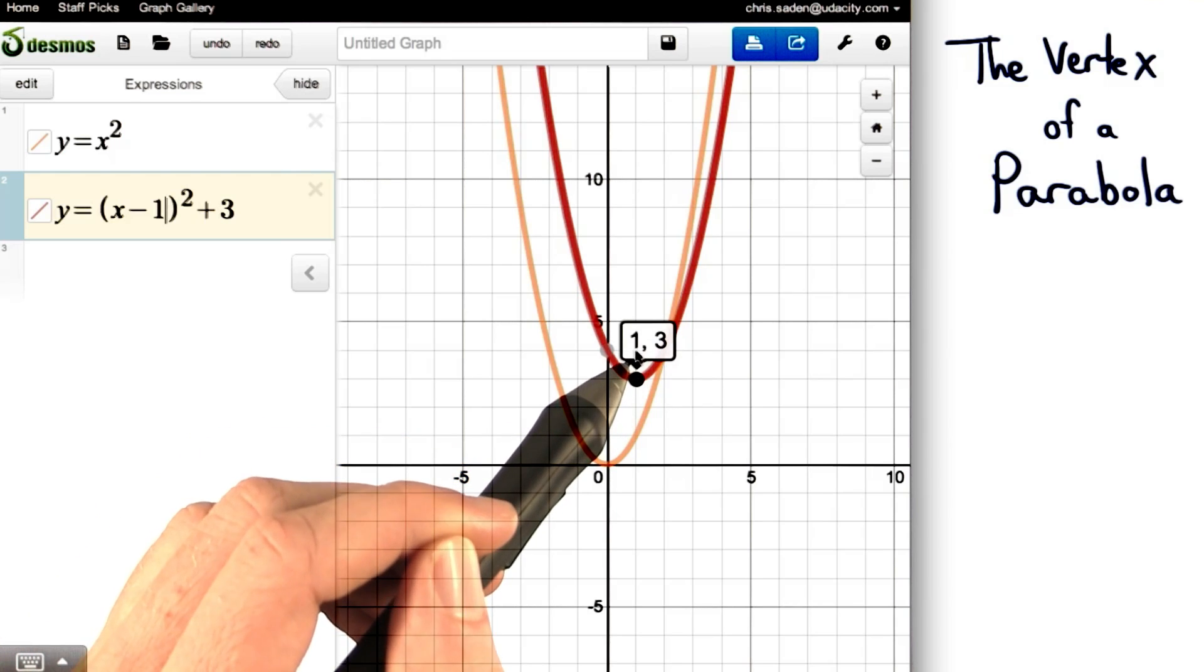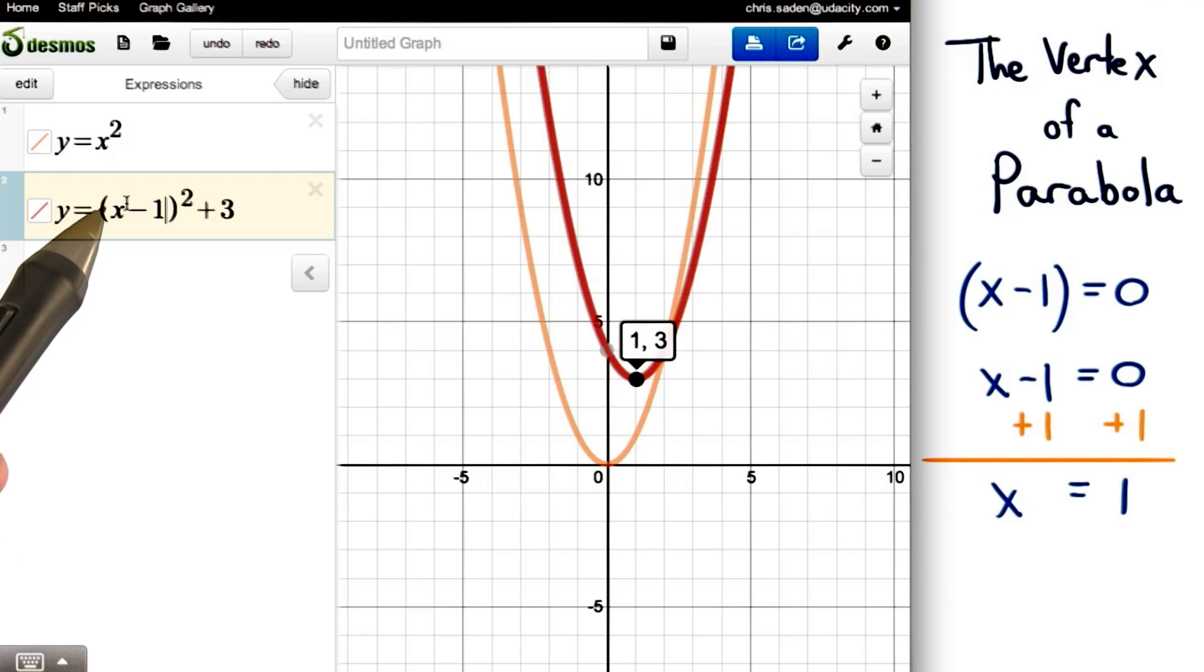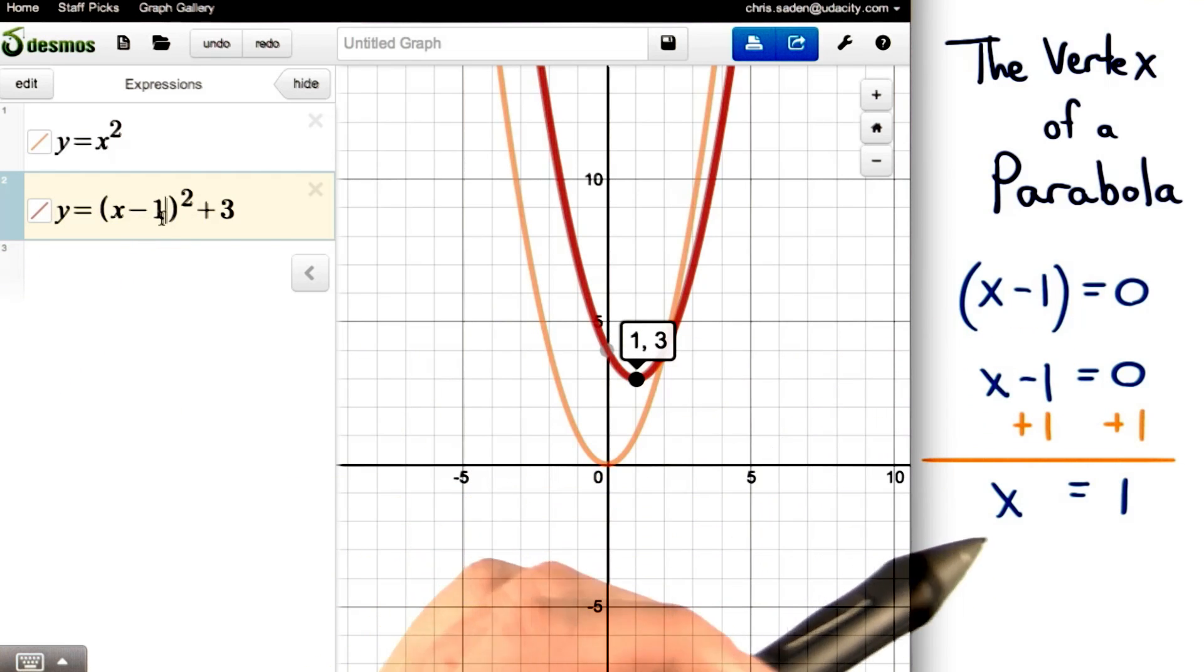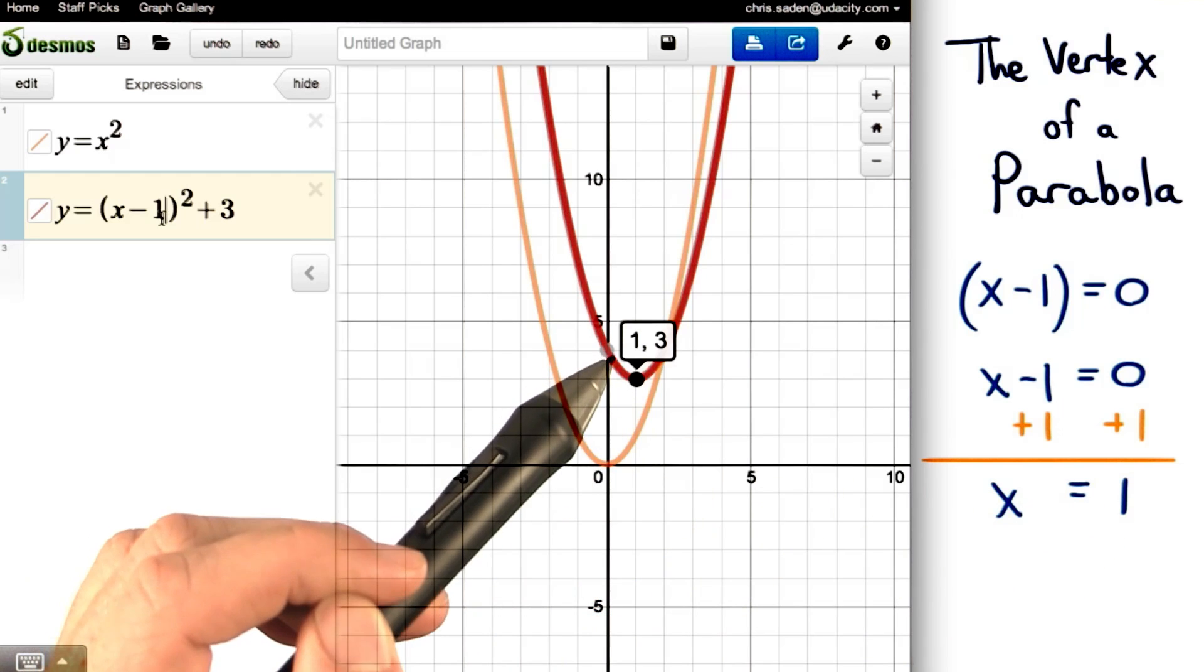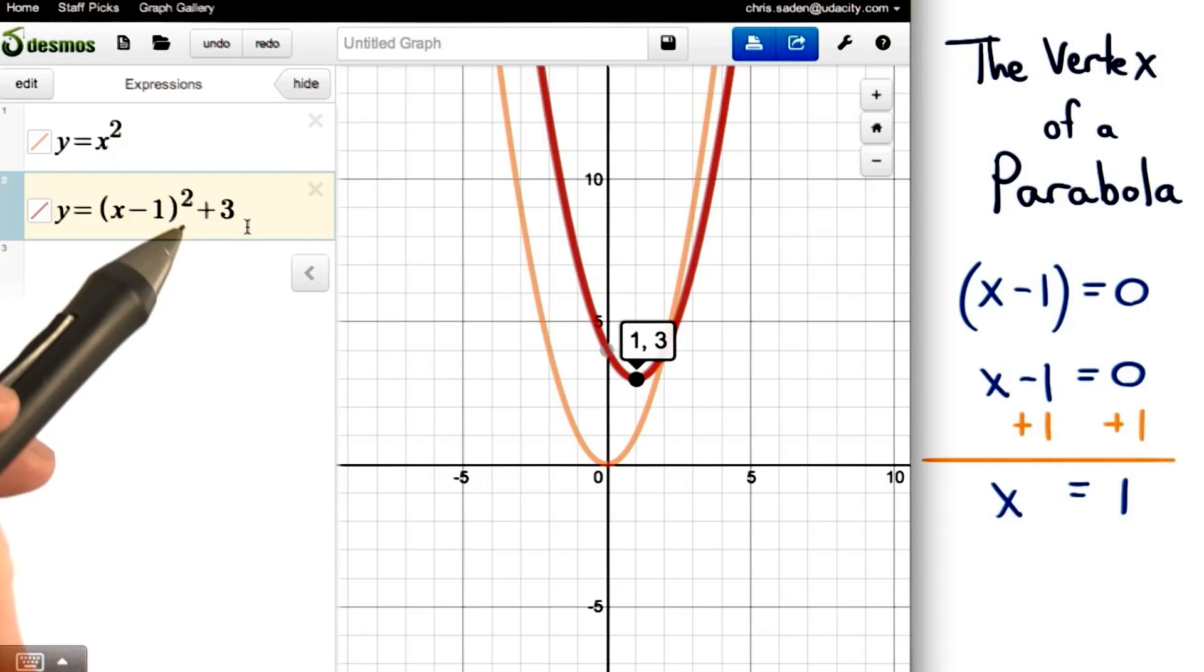Notice that the sign of the x coordinate of the vertex is opposite from the one in here. For our parabola, we can set this binomial equal to 0 to find the x-coordinate of the vertex. So, in this case, x would equal 1. The y-coordinate of the vertex is simply found by the number that's added or subtracted at the end of the equation.